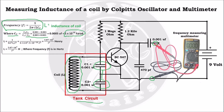Since we have to calculate the inductance L, the final formula will come after rearranging this formula and keeping the values of Ct and Pi. Now by connecting the coil whose inductance is to be measured in this circuit and measuring its frequency with a multimeter, the inductance of the coil can be calculated by placing it in this formula.